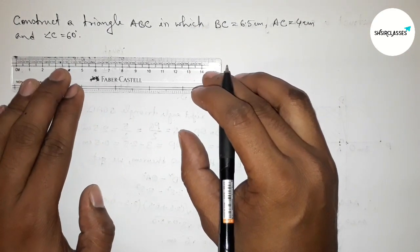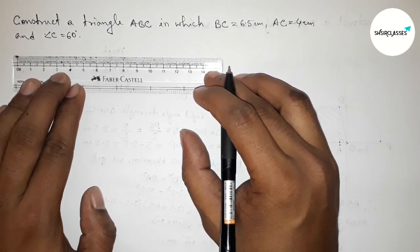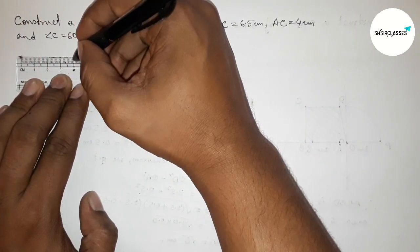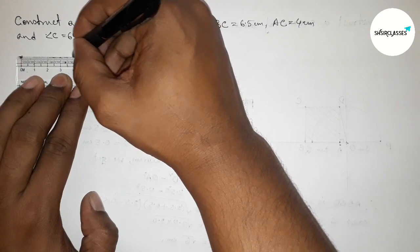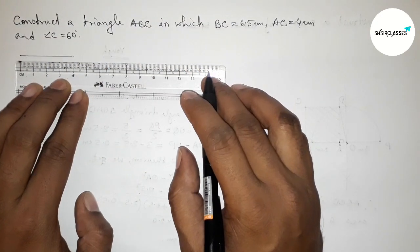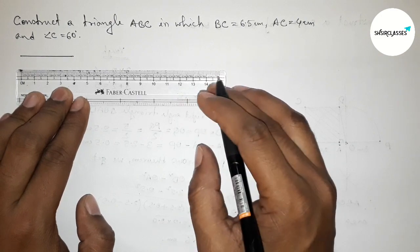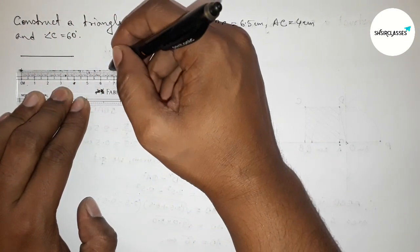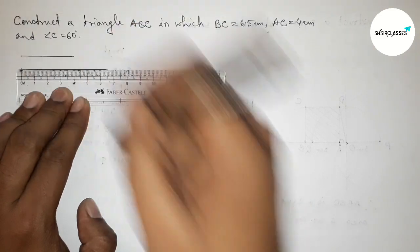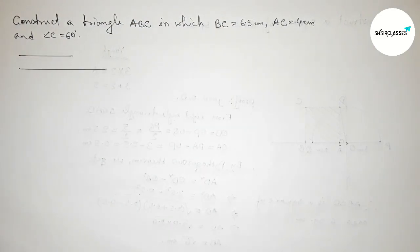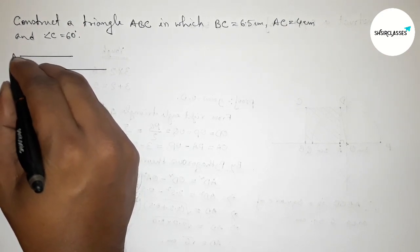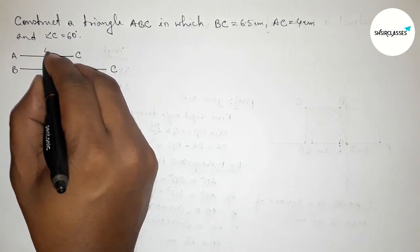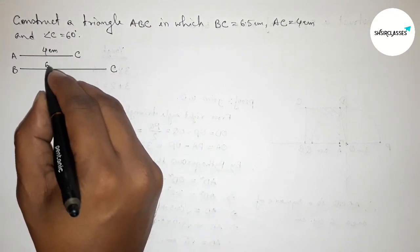First of all, let us draw the given two sides. First, drawing a 4 centimeter line segment. This is the 4 centimeter line segment, and drawing another 6.5 centimeter line segment. This one is the AC line and this one is the BC line segment — 4 centimeter and 6.5 centimeter.